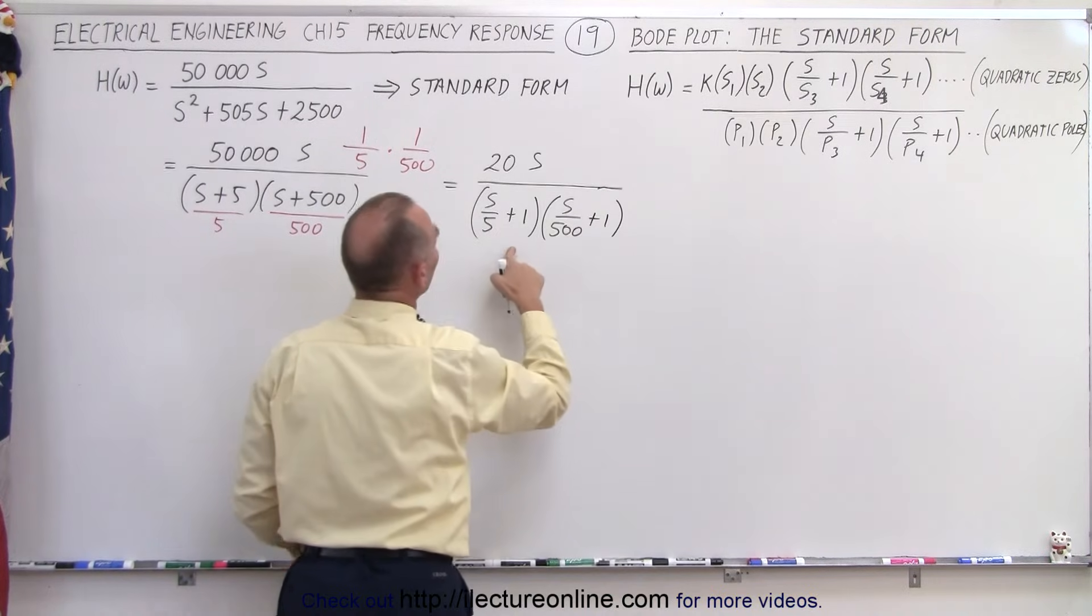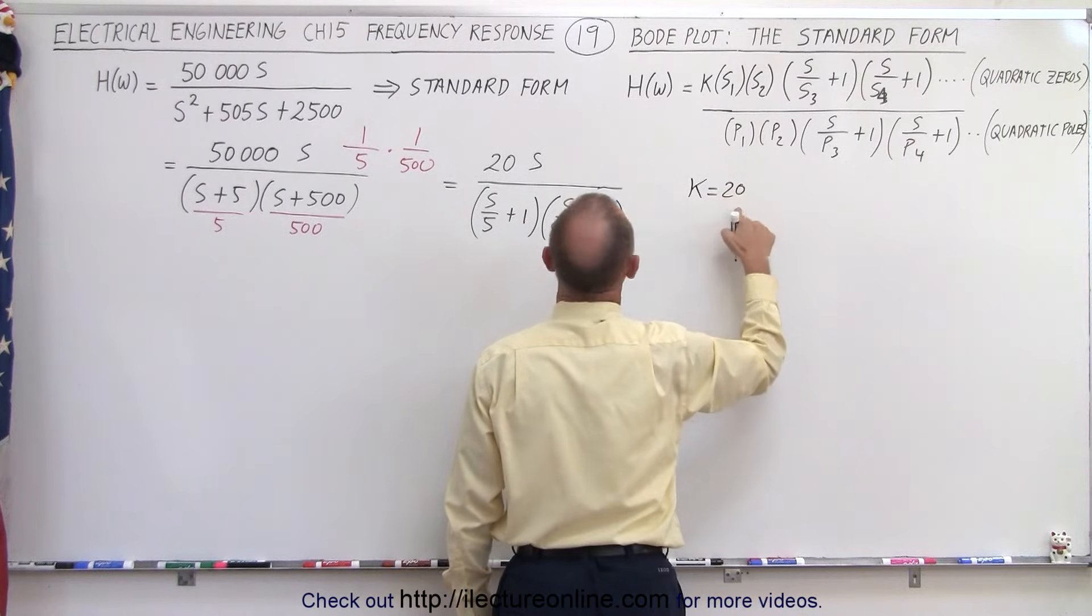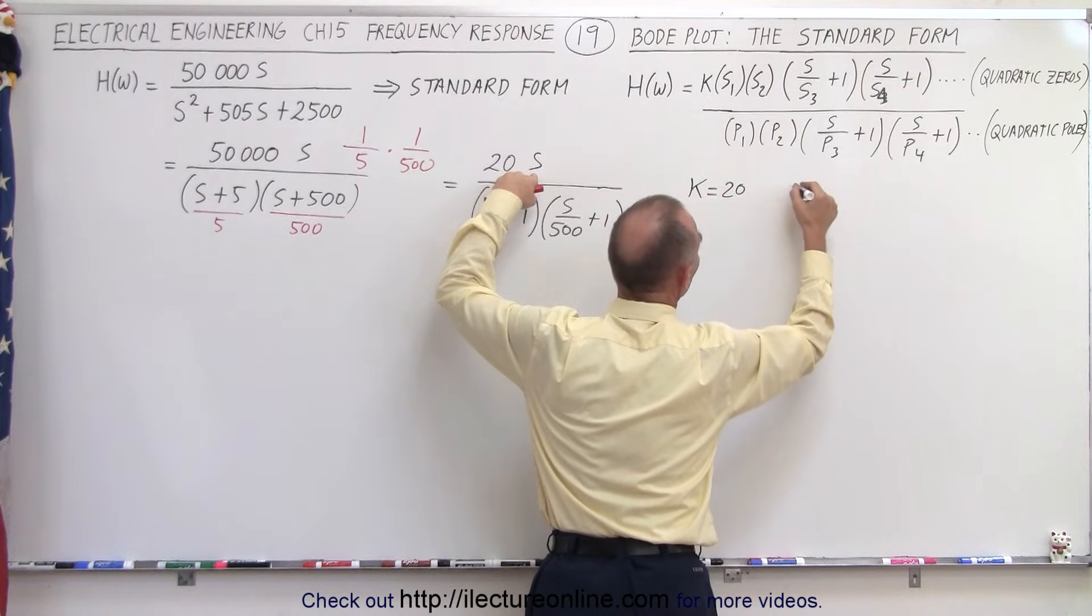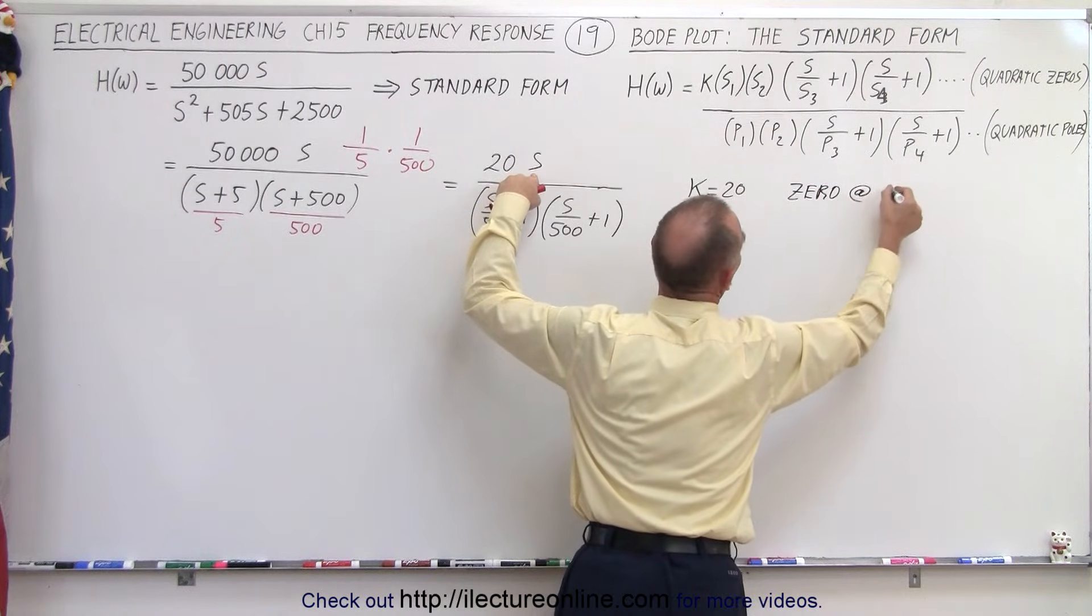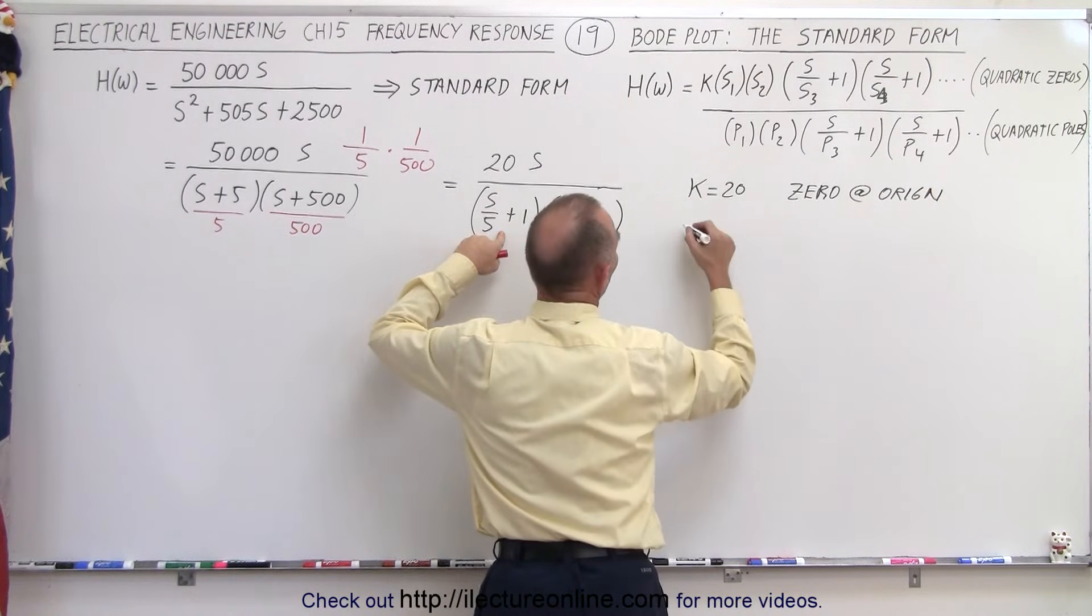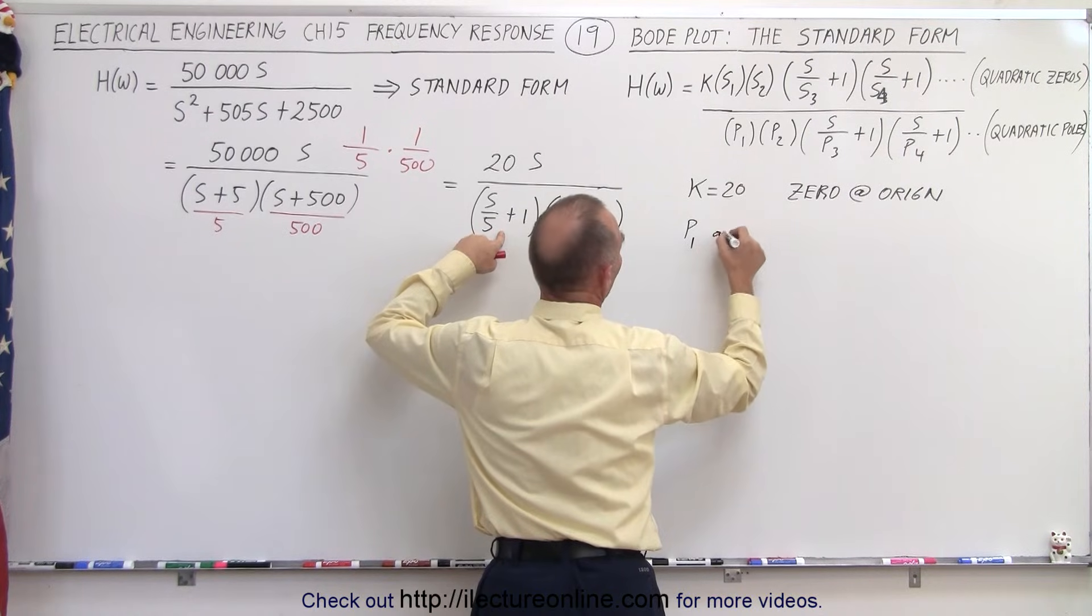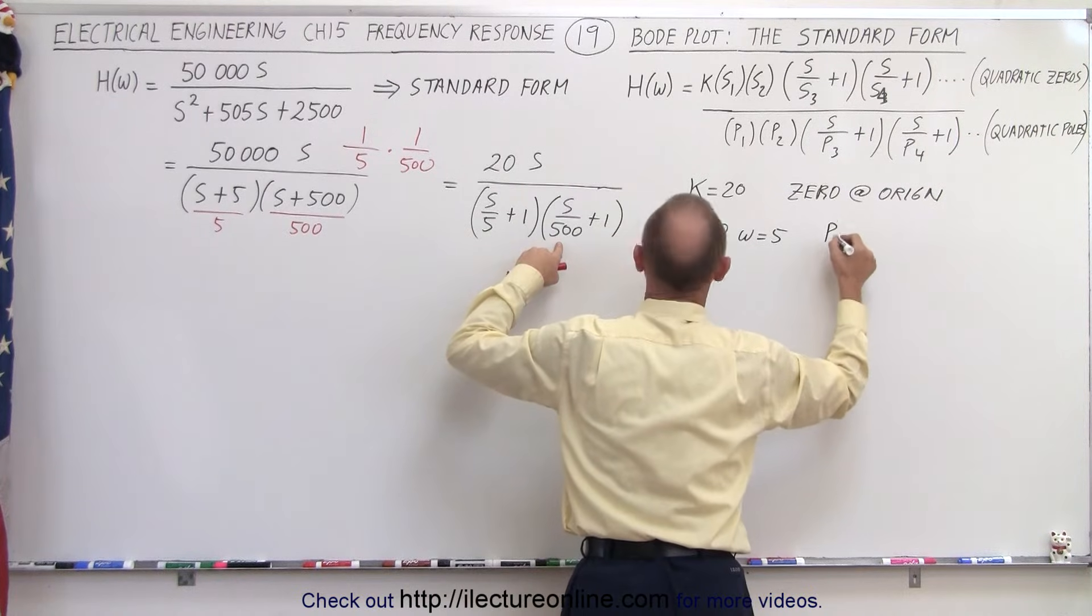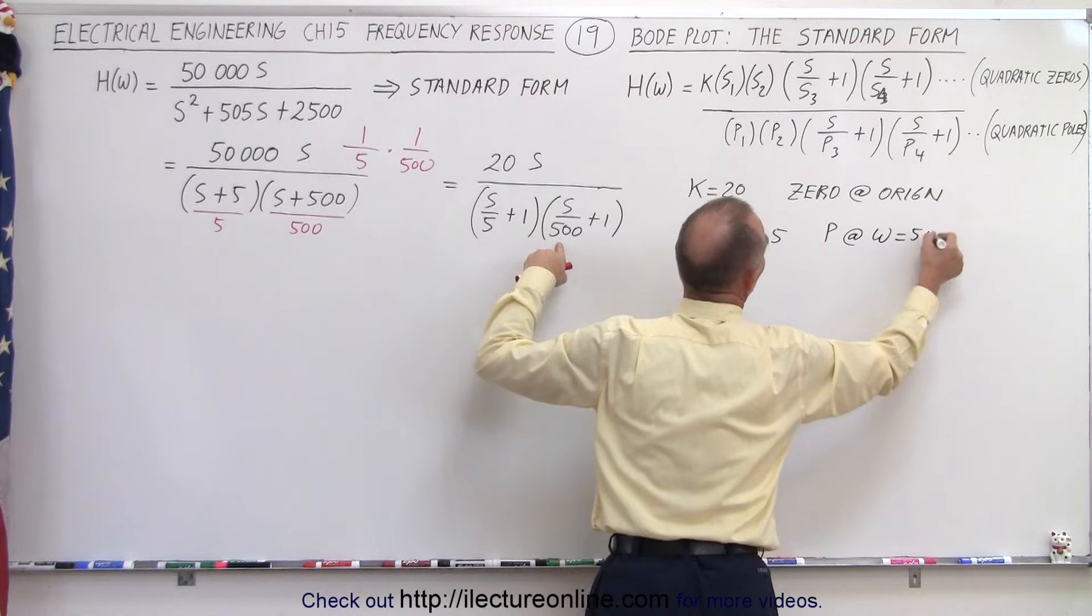Now notice that in this case we can deduce that we have k equals 20, that's the constant gain. We have a zero at the origin because of this. Then over here notice we have a pole at omega equals 5 and we have a pole at omega equals 500.